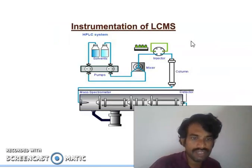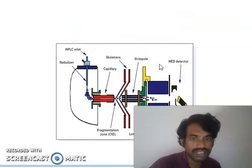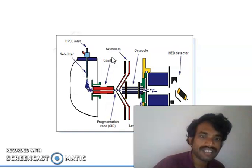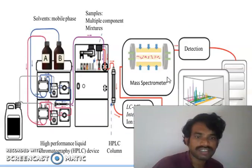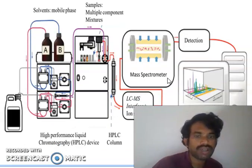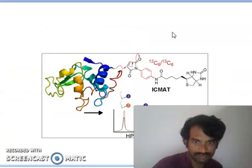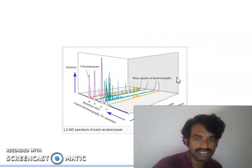Regarding instrumentation of LC-MS: solvents and pumps go to the mixing head, then to the detector column, then to the mass spectrometer. When the compound moves from HPLC to the nebulizer, then to the ion source, then to the quadrupole analyzer, the mass spectrum is generated. There is also a quadrupole one and quadrupole two mass analyzer configuration, and this can show protein-ligand interactions. This is the actual graph of the LC-MS spectrum of the resolved peak, showing x-axis and y-axis compound data.